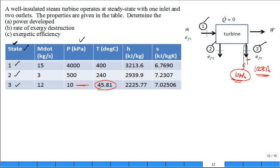I forgot the quality. I probably have it written somewhere here. Eighty-five percent. X is 85 percent. So it's high quality steam coming out of state three.